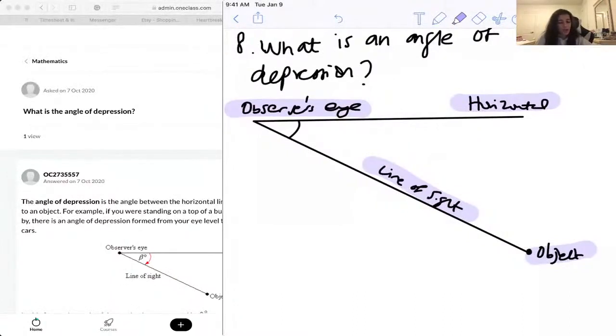You at the top will be the observer's eye, that's your horizontal, and that will be your line of sight going right across.